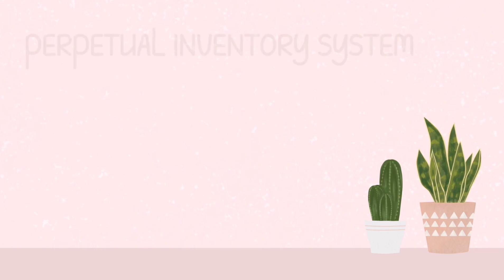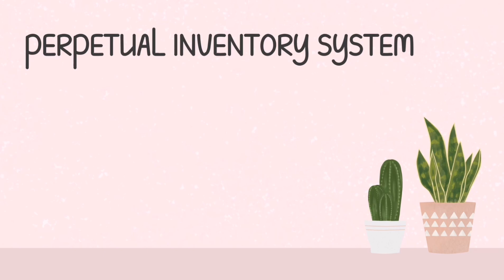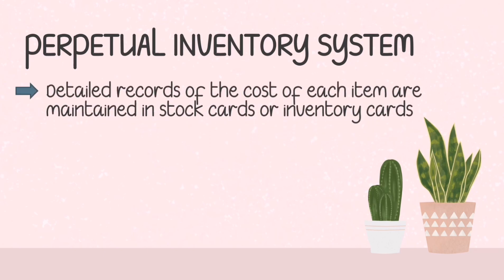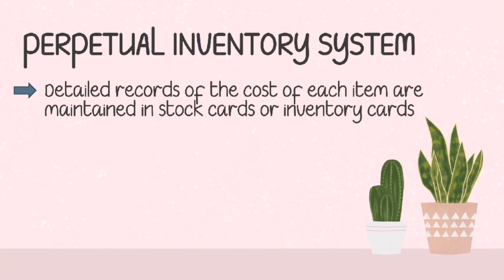Another type is the perpetual inventory system. In here, detailed records of the cost of each item are maintained in stock cards or inventory cards. Stock cards reflect both the unit and cost of each item. In short, stock cards are a summary of inventory inflow and outflow.